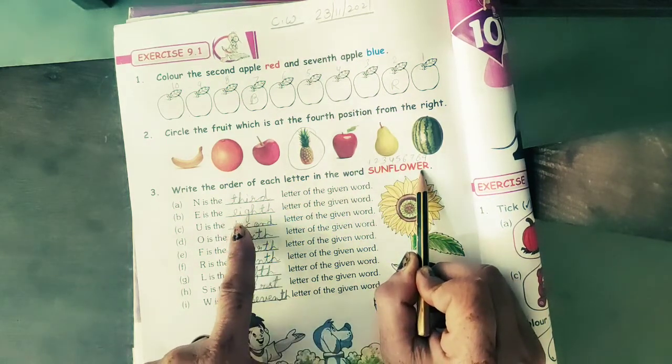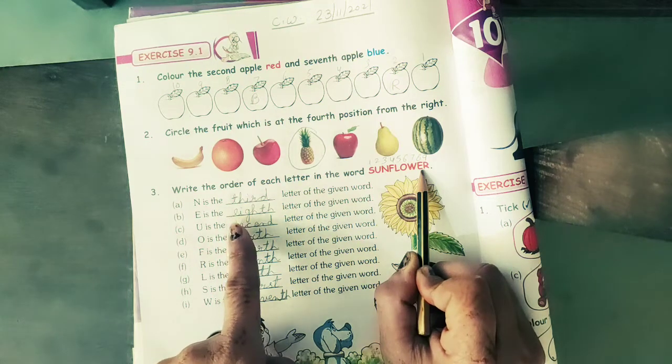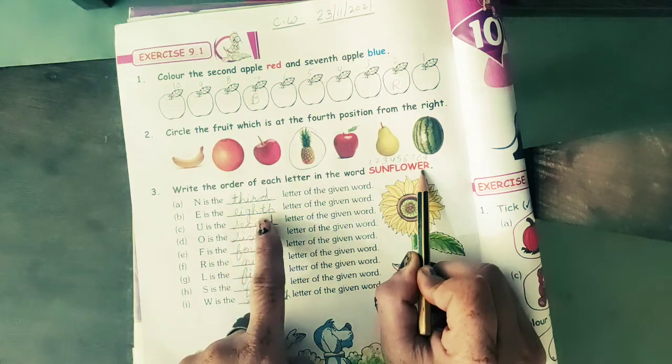The spelling of 8th is E, I, G, H, T, H.